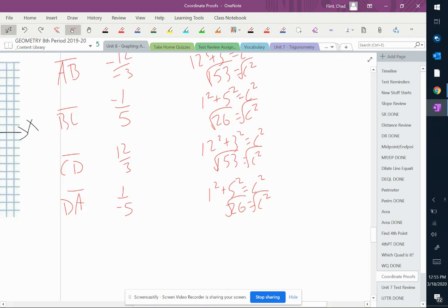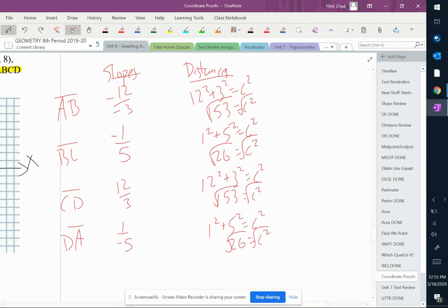Here is my table with all of the slopes and distances right there. So for a parallelogram, I want two pairs of parallel sides. I'm going to look for that, so I should see right away that these two are parallel because those slopes are the same.